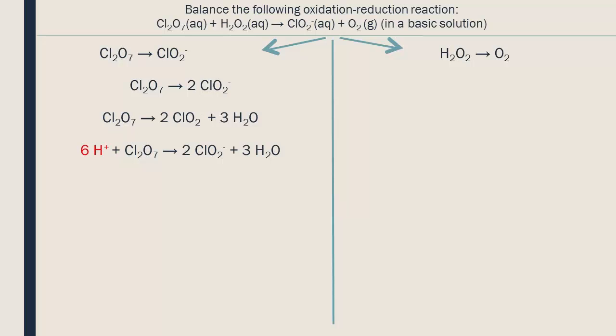Because we are in a basic solution, we have an extra step to do. We have to add as many OH- ions to both sides of the equation as we added H+ ions on the one side. On the side that we have both H+ and OH- ions, we form water. This cancels the H+ ions that we added. Now we only have OH- ions on the other side, which is how our reaction is in a basic solution.